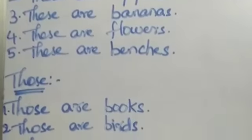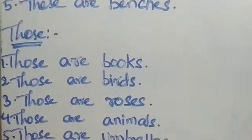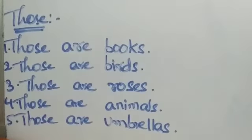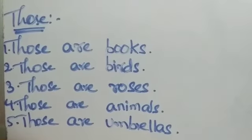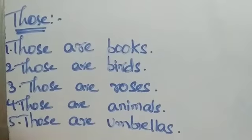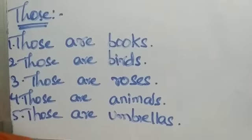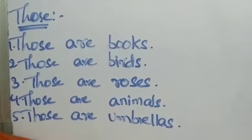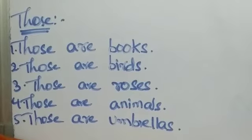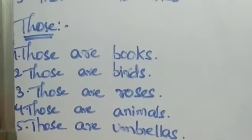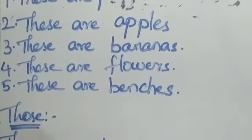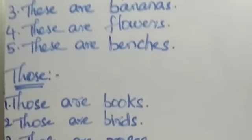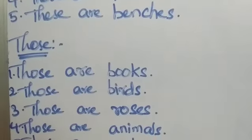Now moving towards examples of 'those': those are books, those are birds, those are roses, those are umbrellas. 'Those' is used for objects which are far and in plural form. 'These' is used for objects which are near and more than one, while 'those' is used for objects which are far and more than one.